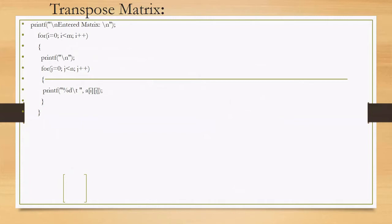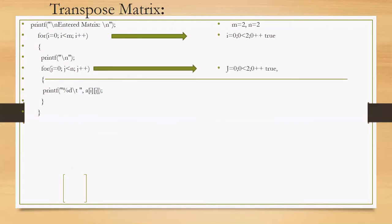To print the input matrix, I use two for loops again — outer for loop over m (rows), inner for loop over n (columns). printf prints a[i][j] for each position. Starting with i=0, j=0: a[0][0]=1 is printed. j increments to 1: a[0][1]=2 is printed. j becomes 2, inner loop fails.